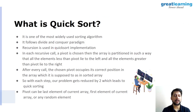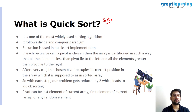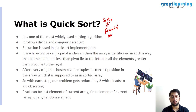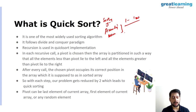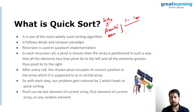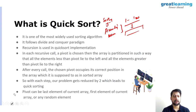Before we understand what quicksort is, let's try to understand what sorting is and why we require it. Sorting is a mechanism wherein we arrange our data either in ascending order or in descending order. For example, if you have 10 students with role numbers from 1 to 100 and you want to know which role numbers are present, absent, or have left — sorting makes it easy to detect which students are absent.